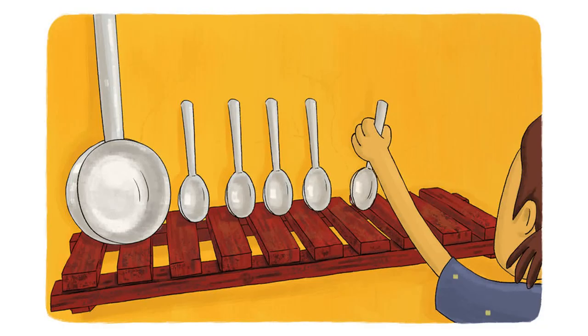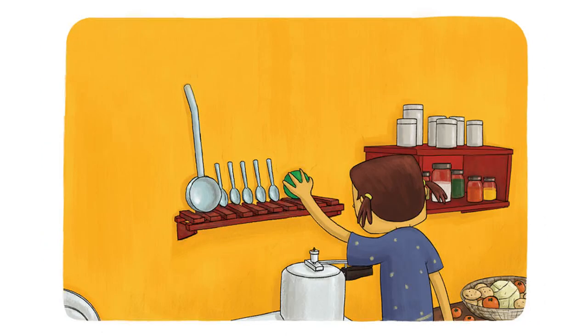She then makes five of Nani's spoons stand up. These are the ones Nani uses to sip her watery kichdi. Finally, Nivi places her favorite plastic ball right above the spout of the pressure cooker.